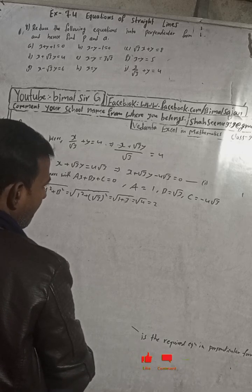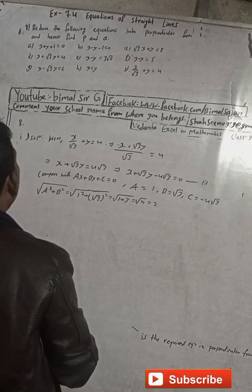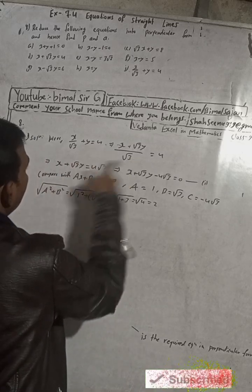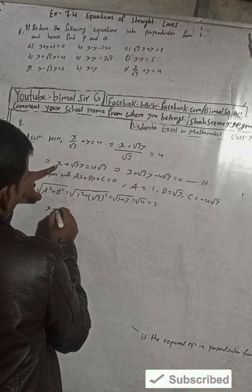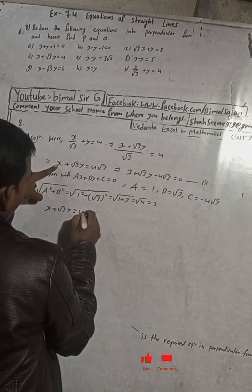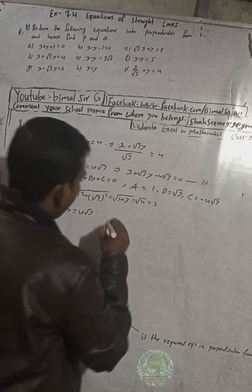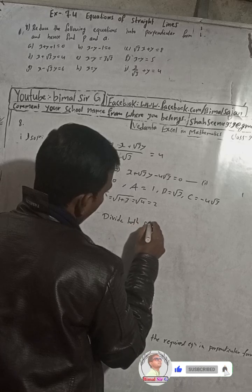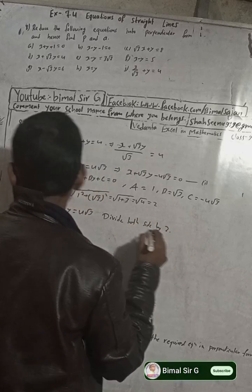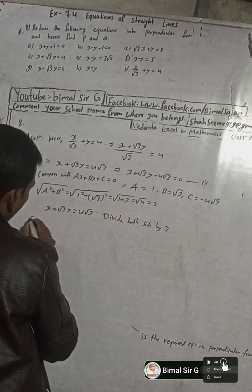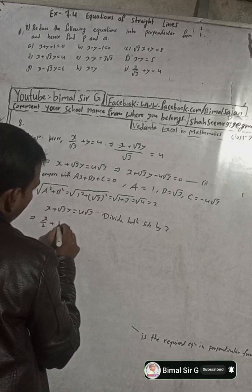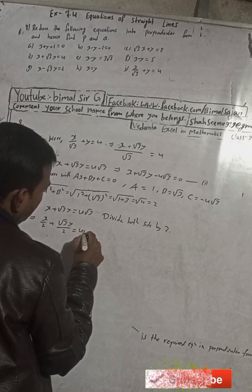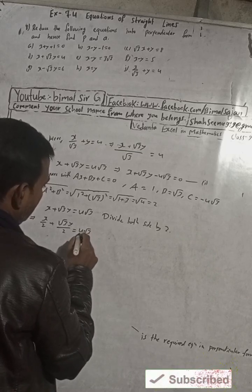Now, the standard equation is x + √3y = 4√3. We divide both sides by 2, giving x/2 + √3y/2 = 4√3/2.